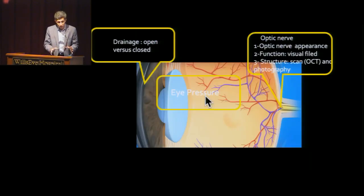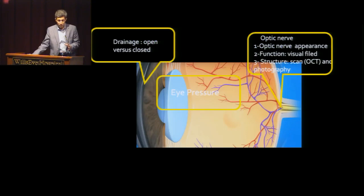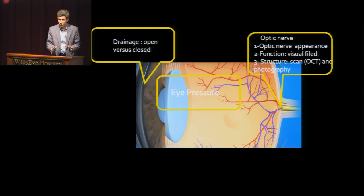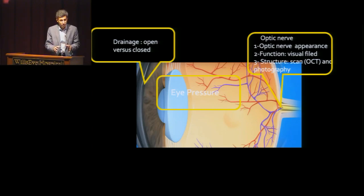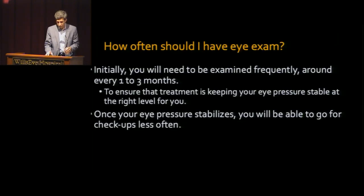This picture shows the worsening of glaucoma over time — the color changes from green to yellow and then to red. Overall, we check the eye pressure, the drainage system, and the optic nerve. All the tests we perform are focused on the optic nerve, because the main purpose is protecting the optic nerve and preventing any further damage.